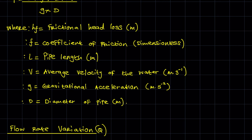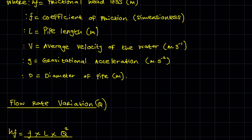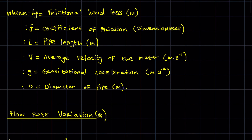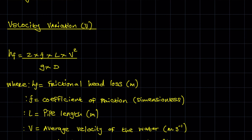We use average velocity because, when considering friction losses, the problems we look at tend to have a constant diameter. Because the diameter is constant, the velocity is going to be the same throughout the fluid's motion. Hence, if we're looking at two sections of the pipe, v1 and v2 will be the same — so we label it as the average velocity. g is the gravitational acceleration and d is the pipe diameter.